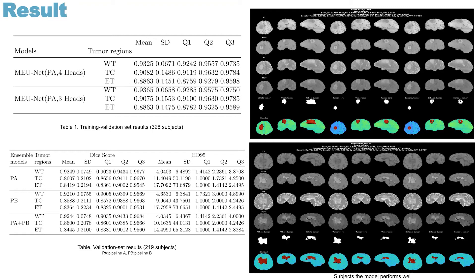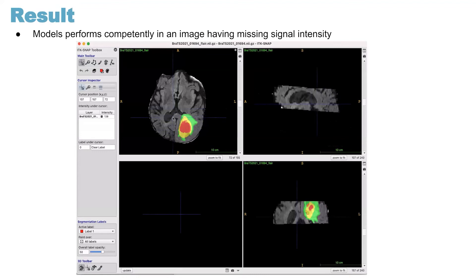These are two subjects where the model precisely segments all three regions with DICE scores above 0.95 across regions. This is an example where the model performs competently even in an image with missing signal intensity, still quite competently segmenting and predicting the tumor region.